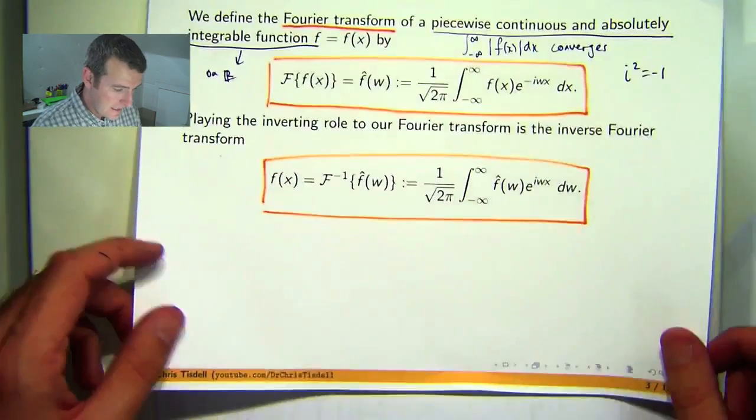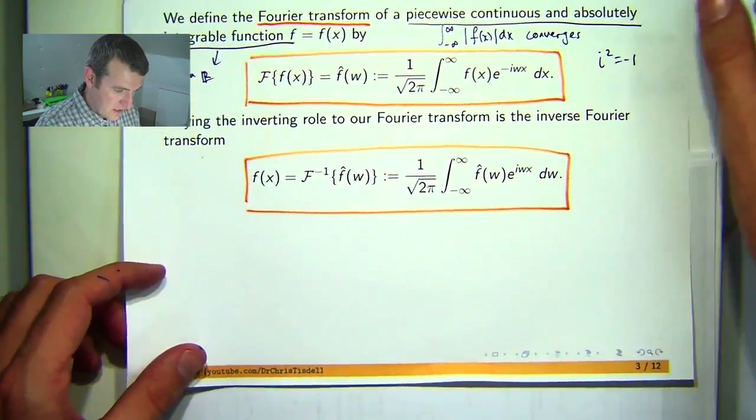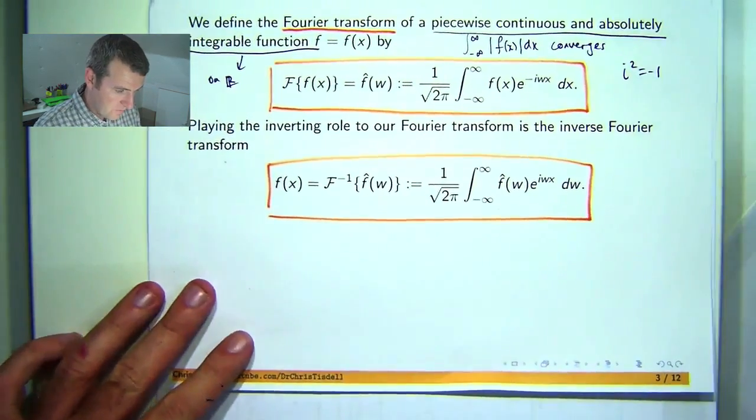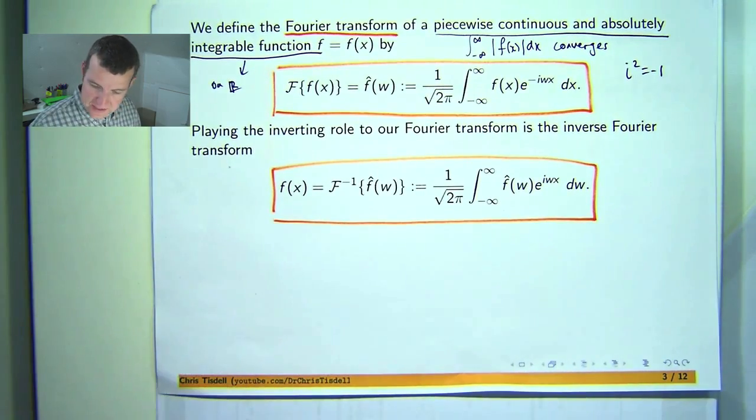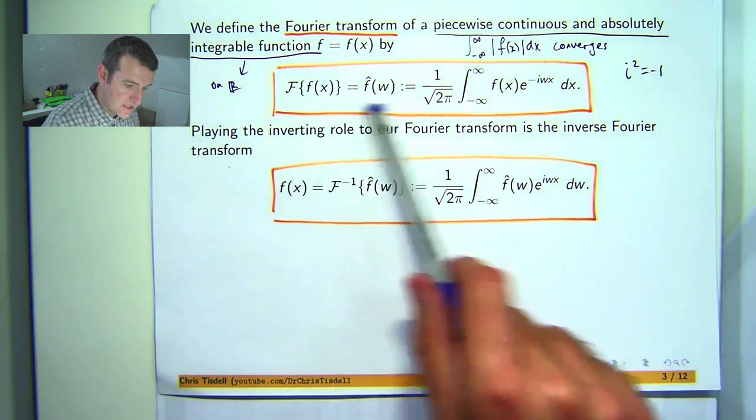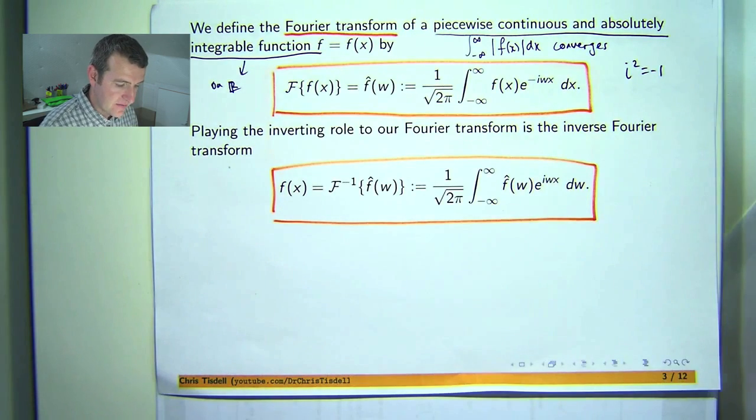Okay, just before we get to the proof, let's remind ourselves of what a Fourier transform is. A Fourier transform is an integral transform. We use this type of notation and the inverse transform is also an integral transform.